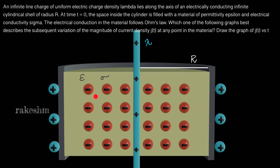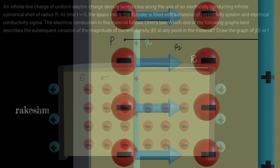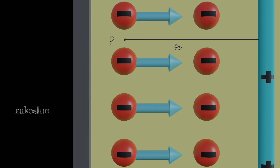The electrons have moved closer to the line charge and a positive charge appears outside the cylindrical shell. Let us consider a point P at a distance r from the line charge. We find the current density at point P as a function of time. Due to the line charge there is a field in the material, and due to that field there is a force on these electrons, causing them to move towards the line charge.